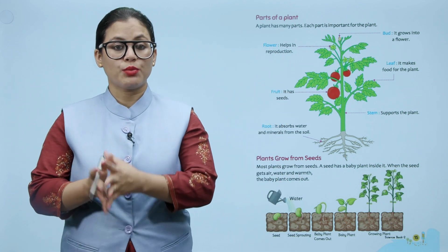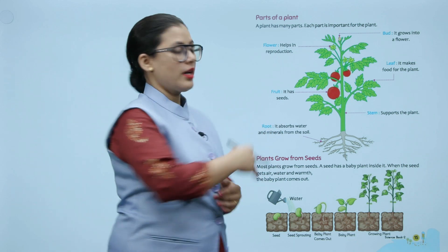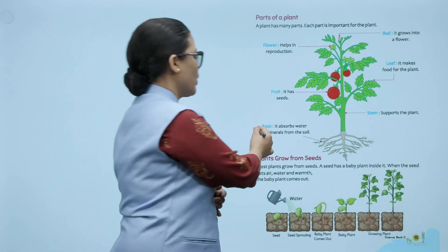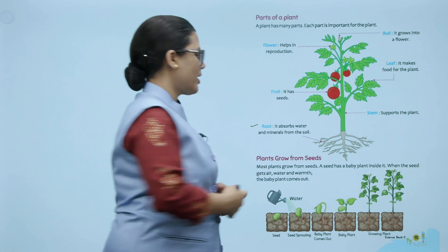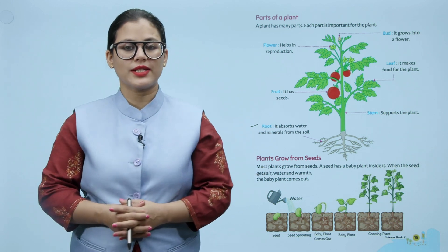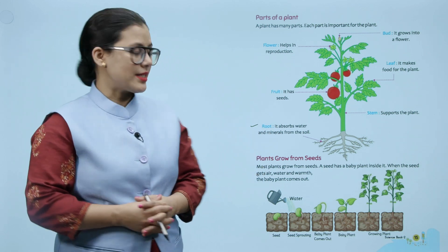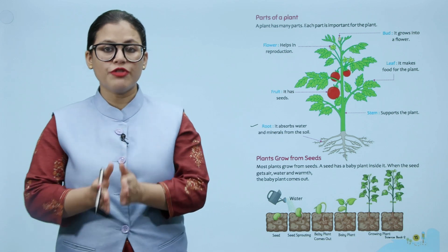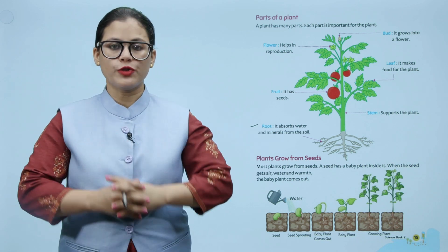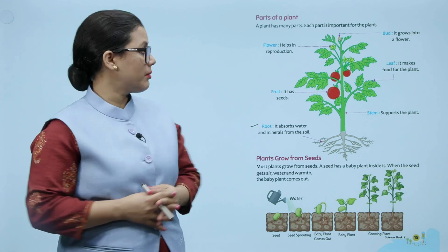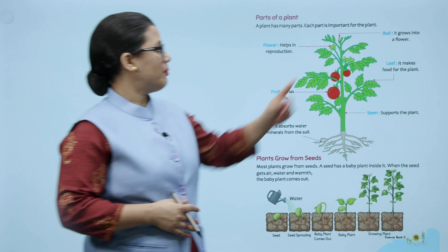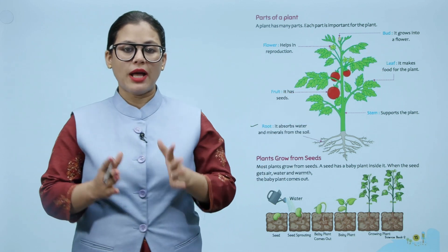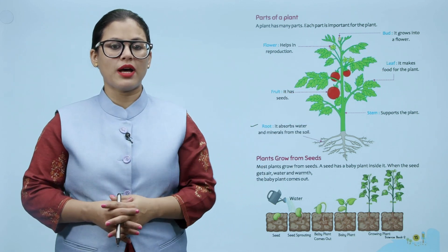Dekho, yeh plant ke different parts aapko dikhaye ja rahe hain. Flower reproduction mein help karta hai. Fruit ka kaam kya hota hai? Ismein seeds hoti hain. Roots ka kaam kya hota hai? Yeh water aur minerals absorb karta hai soil se. Stem jo hai, plant ko support karta hai. Leaf plant ki food factory hoti hai — yeh plant ke liye khana banata hai. Aur bud flower mein grow karti hai.